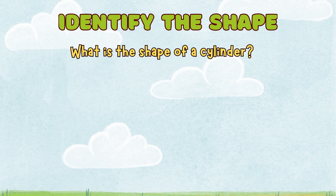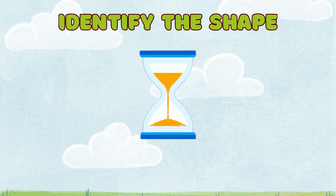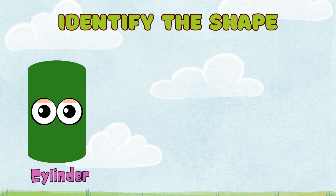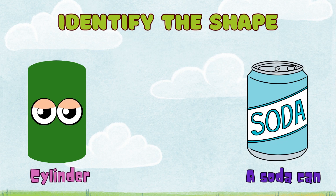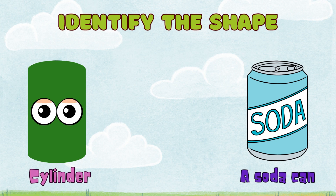What is the shape of a cylinder? The answer is cylindrical. A cylinder is cylindrical in shape. The shape of a soda can is cylindrical.